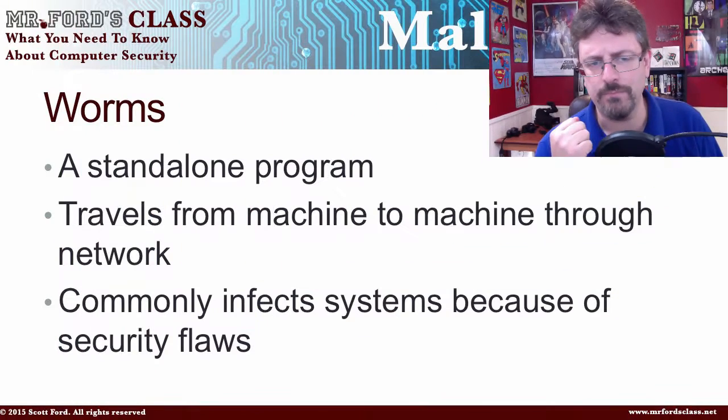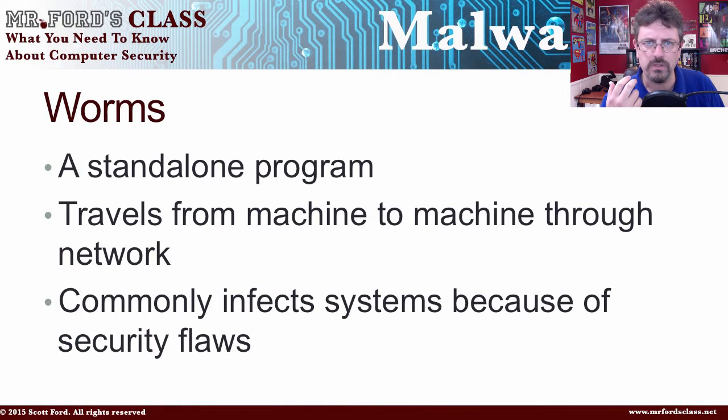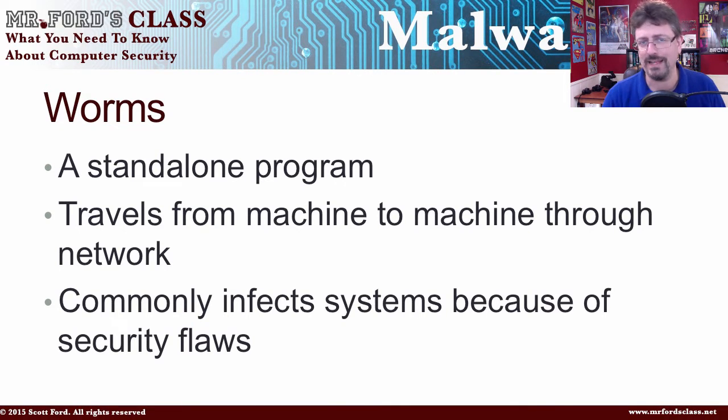Taking a look at another type of malware: the worm. The worm is kind of like a virus, but not quite like a virus. A virus is code that must attach itself to an existing program — like a regular human or animal virus, it has to have a host to replicate. A worm, however, is a standalone program. It doesn't need another program to replicate; it replicates itself.